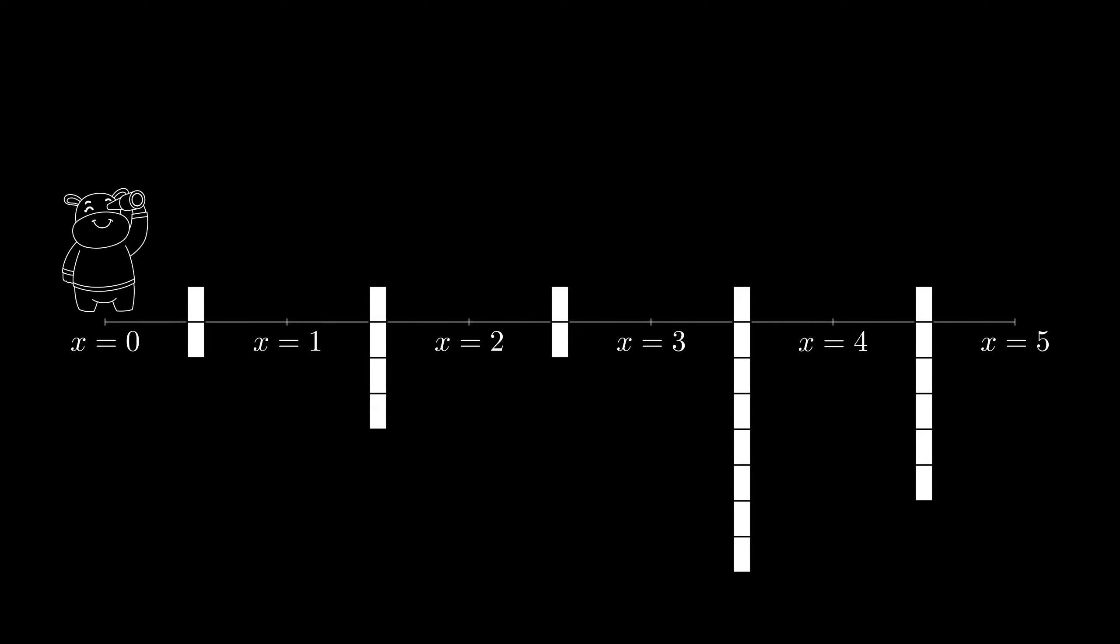Since Bessie can't cross the same interval in the same direction twice in a row, she needs to change her travel direction in between each time.